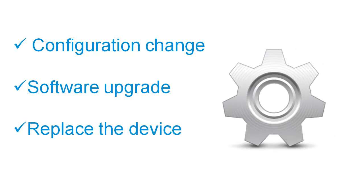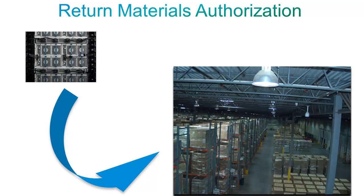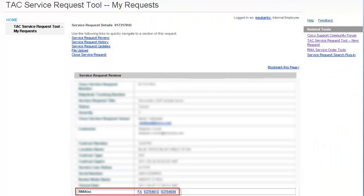If the TAC engineer has determined this to be the case, he or she will open a Return Materials Authorization, or RMA. If an RMA is needed, you will see a linked RMA number appear in your service request. You can click on that link to view information about your RMA.